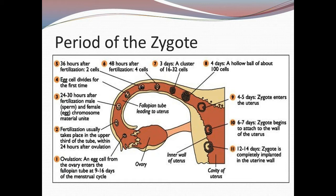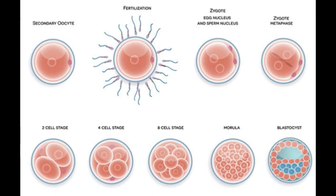The zygote is the technical term for the fertilized egg. From the moment the sperm and egg unite and become one new cell in the fallopian tubes, they make their way down to the uterine wall. That period, which could be about 10 days to 2 weeks, is called the period of the zygote. This period ends when the zygote implants itself into the wall of the uterus — called implantation.